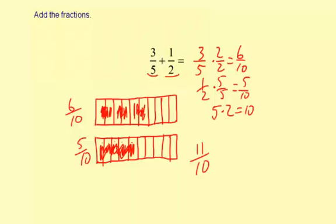So you can write your answer as 11 tenths as an improper fraction, or you could also put 1 and 1 tenth as a mixed number. Either way is correct. So you could put this or this.